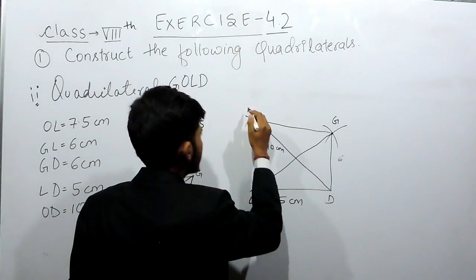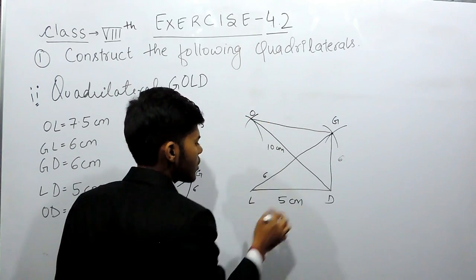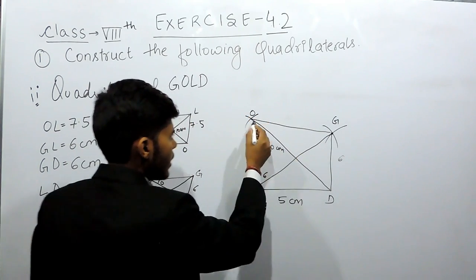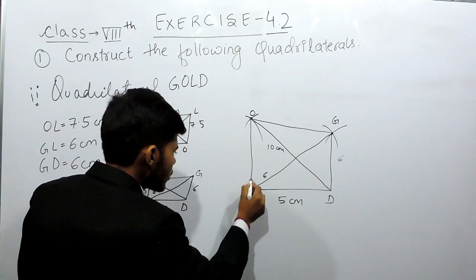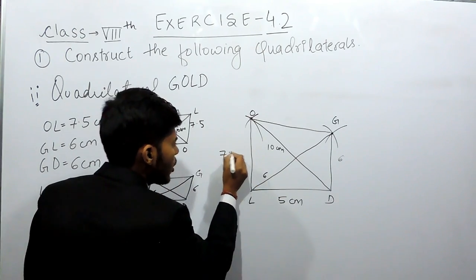If we join these two points, that means OL, this is 7.5 cm.